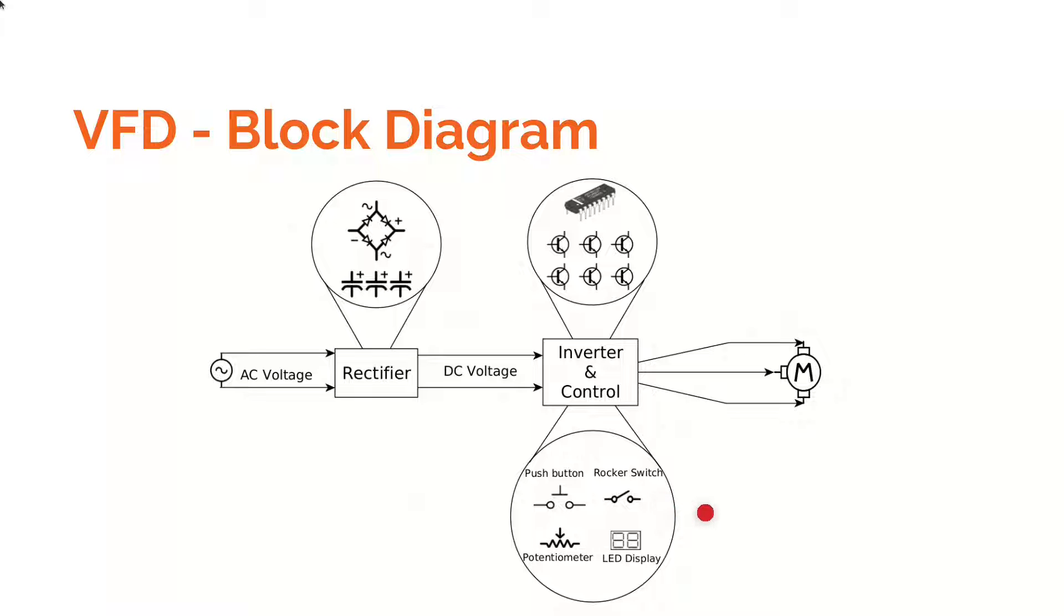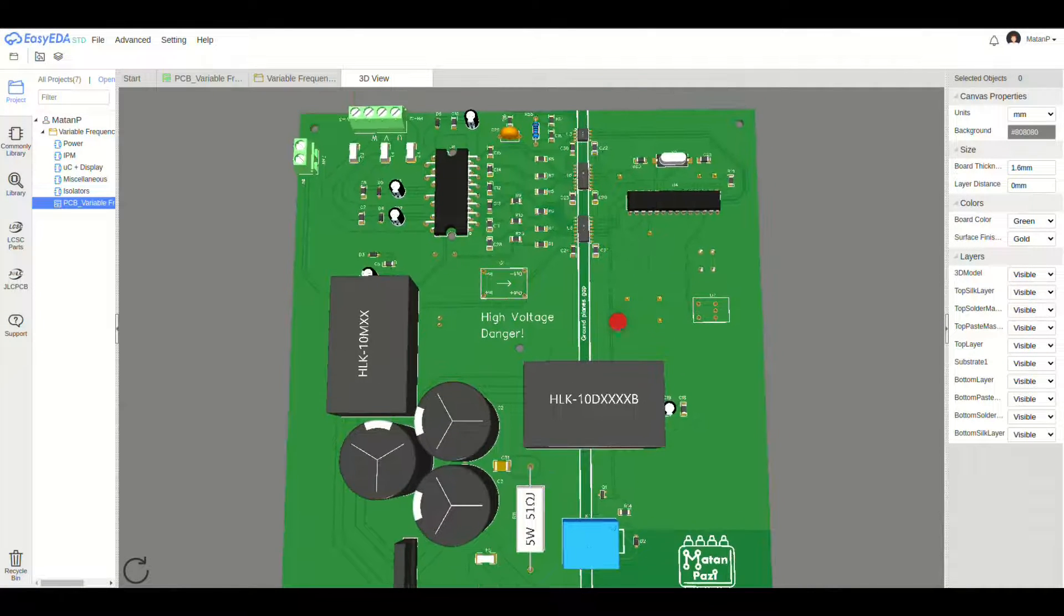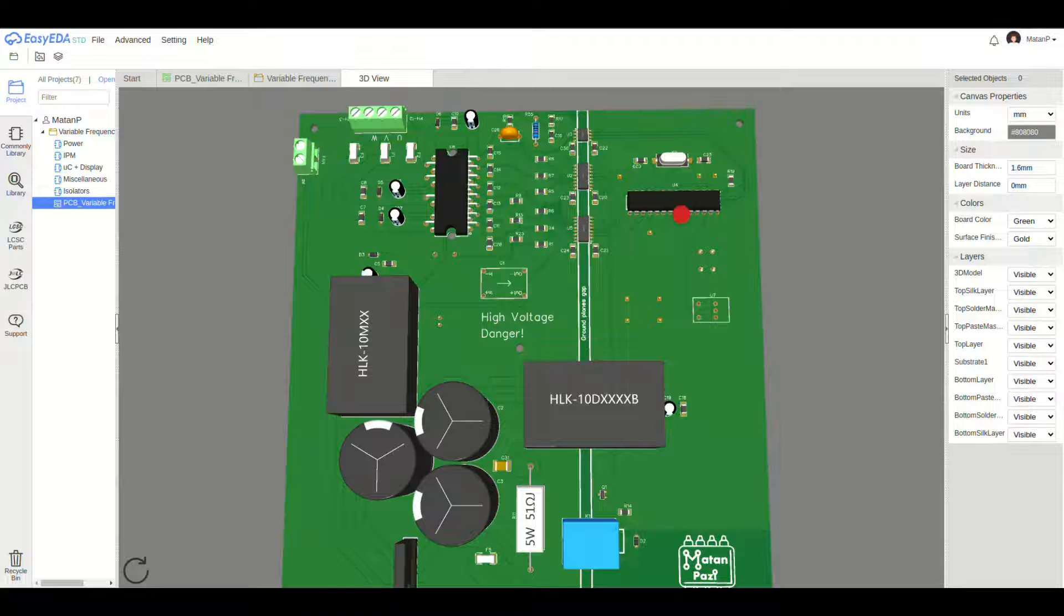Ok, now let's take a quick look at the hardware design. The PCB is divided into two parts, high voltage and low voltage. The low voltage side contains the microcontroller and the peripherals, like the potentiometer, the display, and so on.